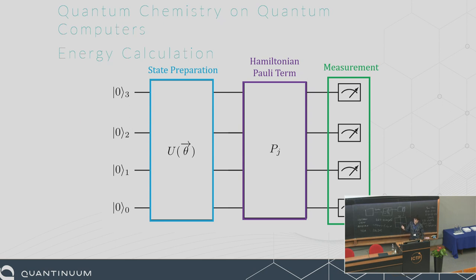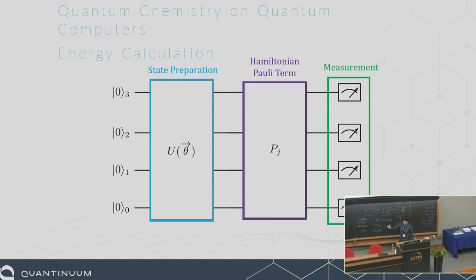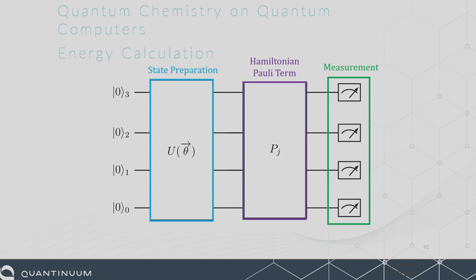VQE is essentially this: you have state preparation — the ANSATZ — which is your wave function with parameters you can change. You then measure the Hamiltonian by individual Pauli terms. You apply the Hamiltonian and measure it, then repeat for each Hamiltonian term. The ANSATZ can be unitary coupled cluster, hardware-efficient, or whatever you want — it depends on how expressive it's going to be and how accurately you can represent the ground state. But so far this isn't even VQE — there's no parameter updating. VQE is the process of updating the parameters; this is just a single energy calculation.